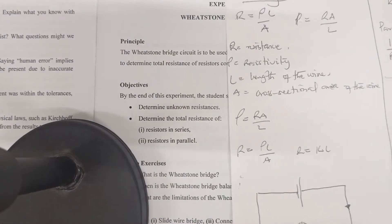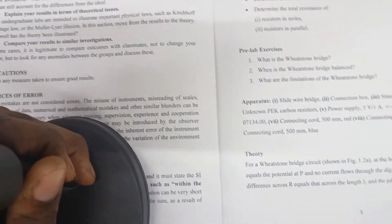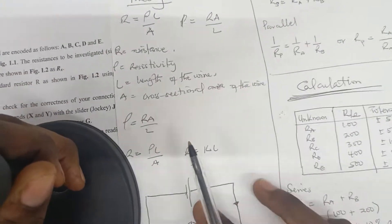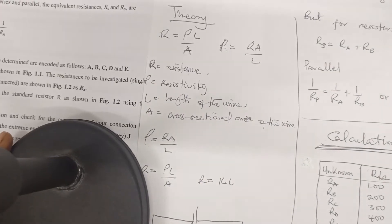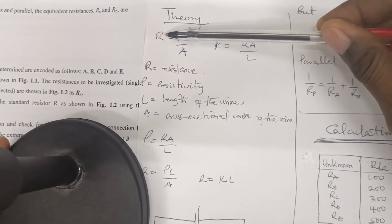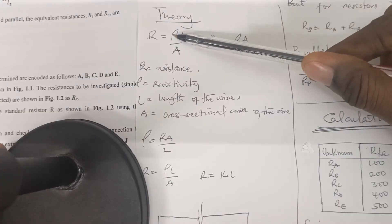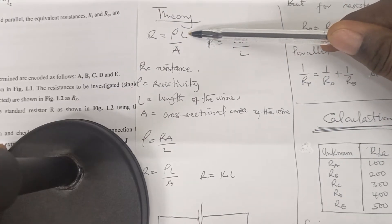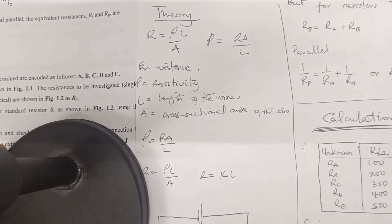Now let's look at the theory. In our book, in the manual, this is the only theory we were given. But we are saying that the Wheatstone Bridge experiment says that the resistance of the wire depends on three things: one, the resistivity; two, the length of that particular wire; and three, the cross-sectional area. So hence we have all this.